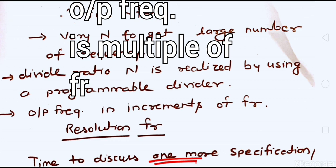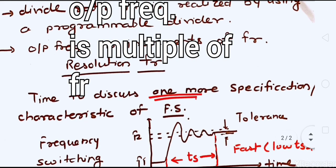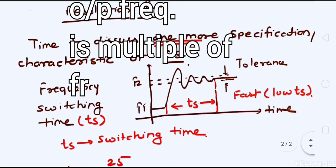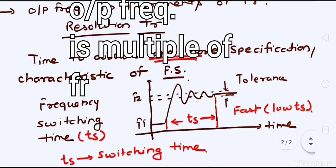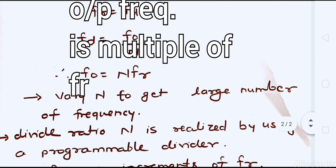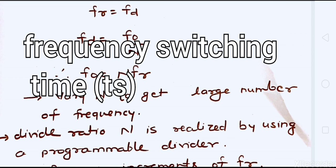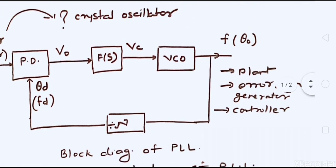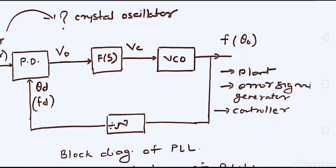There is one more very important specification to discuss: switching time. From the expression FO = N · FR, I can have two different frequencies F1 and F2 by varying N as N1 and N2. Looking at the block diagram, if I change N from N1 to N2, my output frequency changes from F1 to F2.